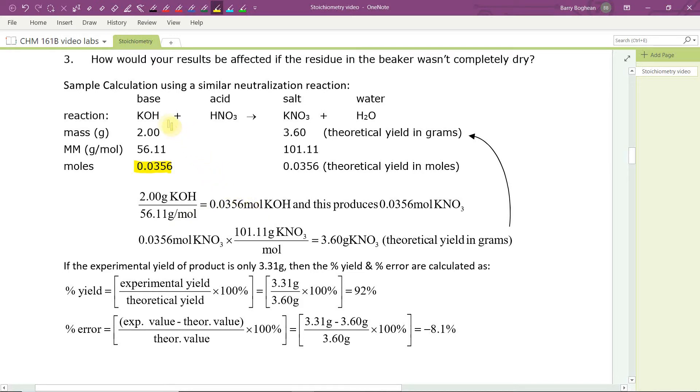And the stoichiometry of the reaction shows us that 1 mole of KOH produces 1 mole of potassium nitrate. And therefore, 0.0356 moles of KOH will produce 0.0356 moles of potassium nitrate.